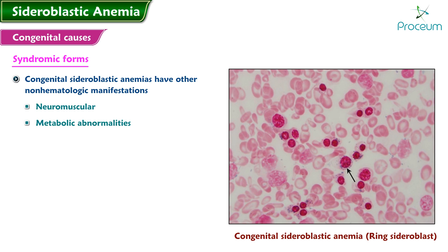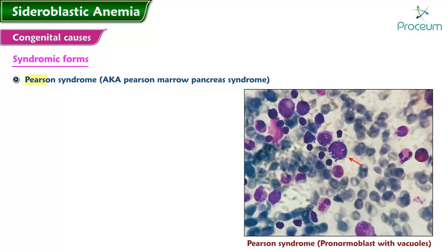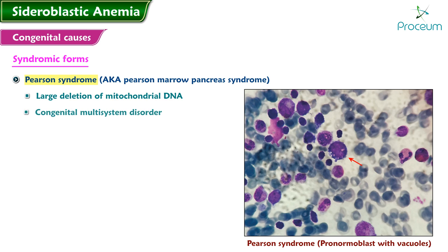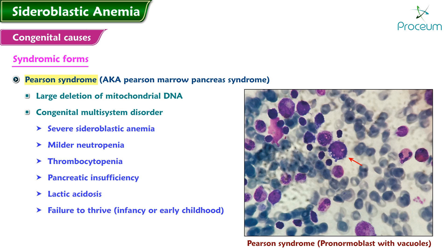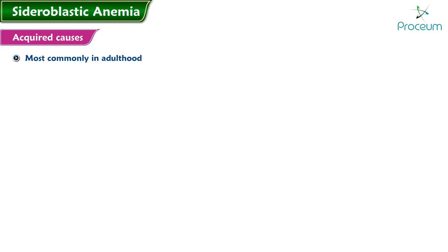Syndromic forms: syndromic congenital sideroblastic anemias have other non-hematologic manifestations such as neuromuscular and metabolic abnormalities, in addition to the ring sideroblast feature. Pearson syndrome (Pearson marrow-pancreas syndrome) occurs due to large deletions of mitochondrial DNA. It is a congenital multi-system disorder characterized by severe sideroblastic anemia, milder neutropenia and thrombocytopenia, pancreatic insufficiency, lactic acidosis, and failure to thrive from infancy or early childhood.